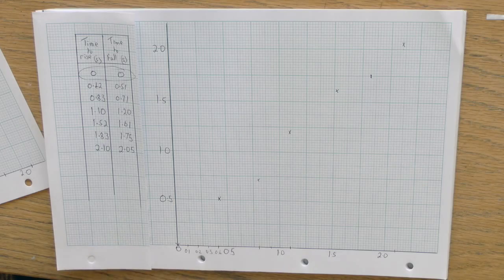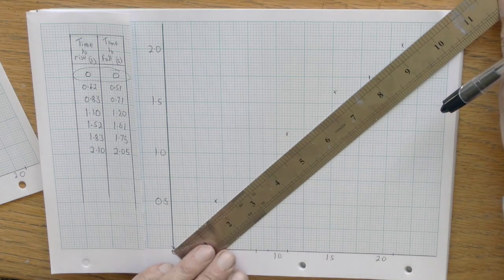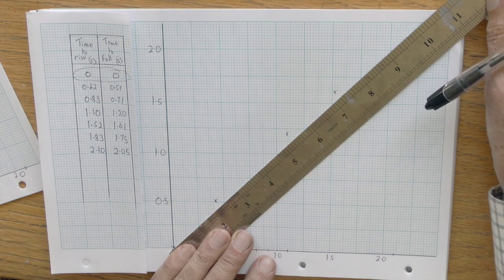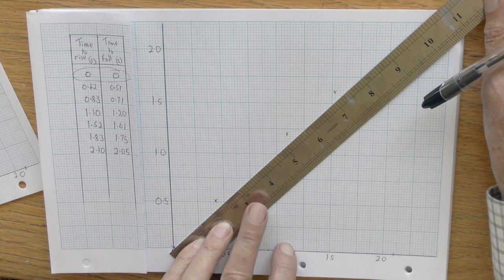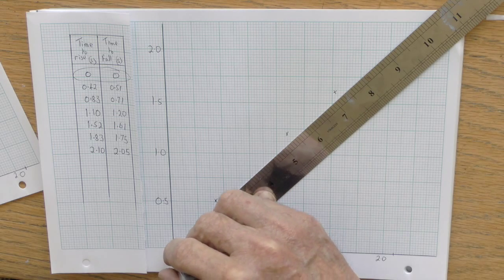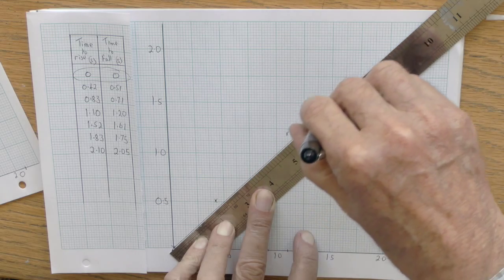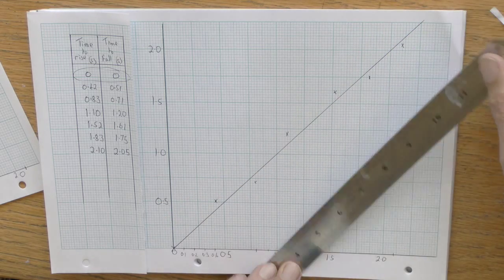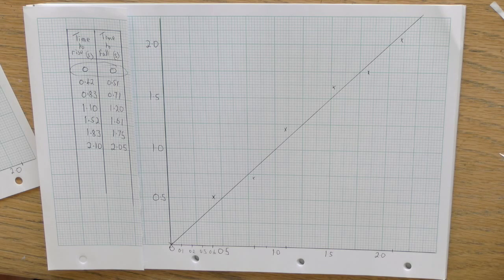This might be because of experimental error or it could be that it's not a straight line relationship. We look at the graph carefully to make that decision and perhaps take one or two extra results to check it through. However, once we have decided, if it is a straight line, we draw the best straight line that we can through or close to as many points as possible, but not trying to bend it or change its shape.